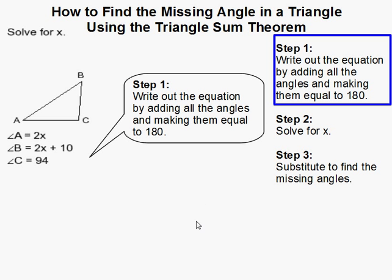The first thing we need to do is write out the general equation by making all the angles add up to 180 degrees, because we know that if you add up all the internal angles of a triangle, they will always equal 180. So angle A plus angle B plus angle C equals 180 degrees.